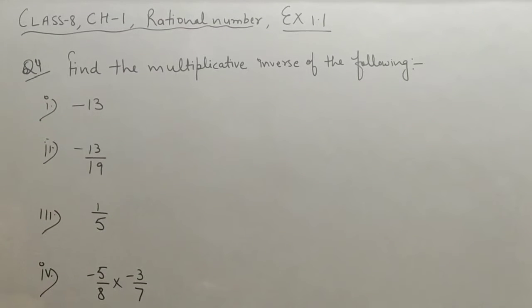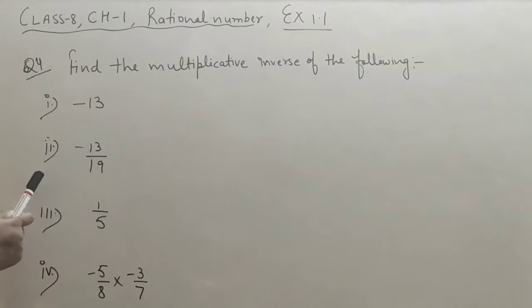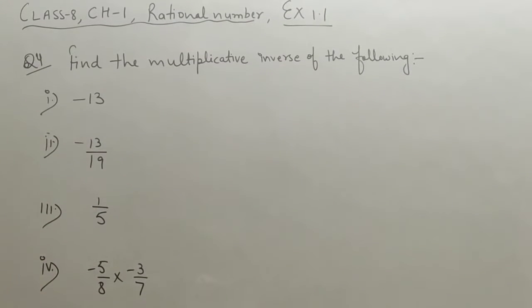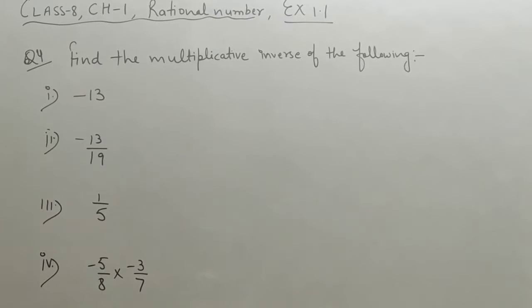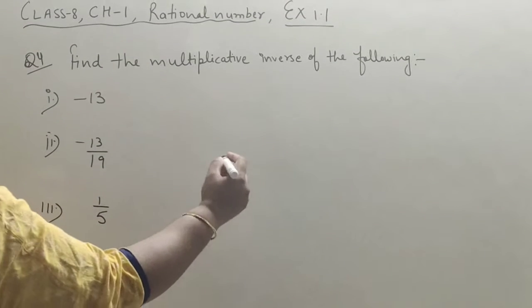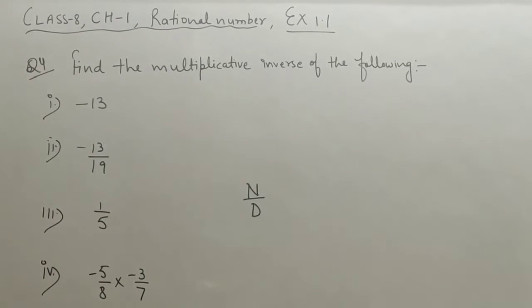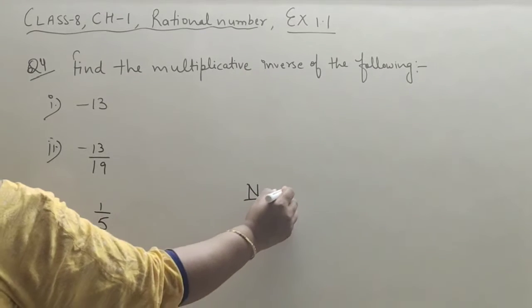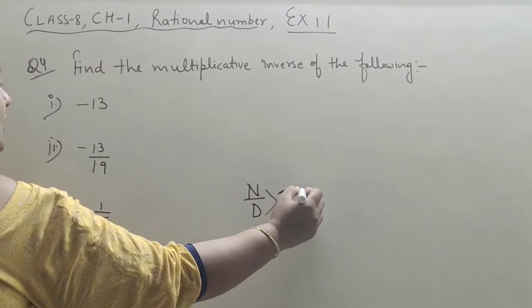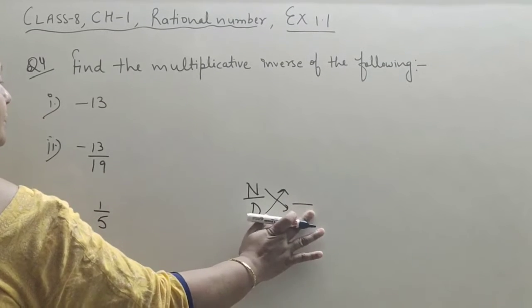The question is: find the multiplicative inverse of the following. What is the multiplicative inverse? If a rational number is in the form numerator upon denominator, in the multiplicative inverse we have to exchange the numerator to denominator and denominator to numerator.